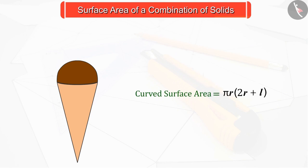We obtain the curved surface area of an ice cream cone as πr within bracket (2r + l).